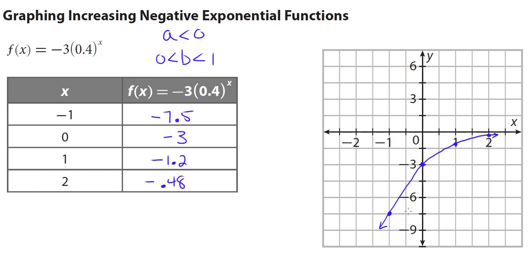Describing the behavior: on the right end, as x values increase forever, y values get closer and closer to the x-axis, so as x approaches positive infinity, y approaches 0. On the left end, as x decreases forever, y values also decrease forever, so as x approaches negative infinity, y approaches negative infinity. I hope this video has helped you understand how to graph exponential functions.